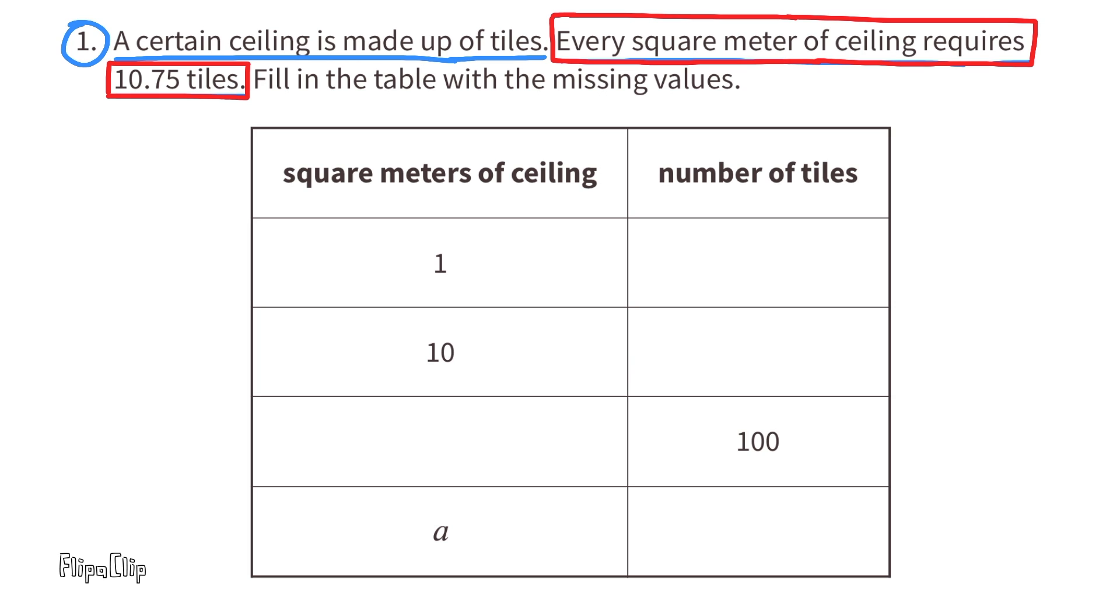Outlined in red, you can see that every square meter of ceiling tile requires 10.75 tiles. That's almost 11 tiles. So 1 square meter of ceiling requires 10.75 tiles.